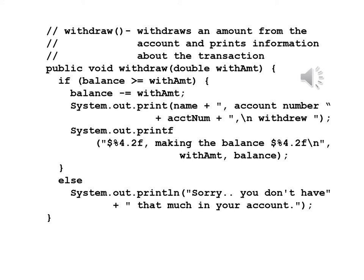And now the withdrawal method: public void withdraw, double withdrawalAmount. If balance is greater than or equal to withdrawalAmount, balance -= withdrawalAmount — I can't take money out unless I have at least that much. System.out.print will print name, account number, and a new line with "withdrew", without taking us to a new line. Then System.out.printf with "$%4.2f making the balance $%4.2f\n", filling in withdrawalAmount and balance. Else, System.out.println: "Sorry, you don't have that much in your account."